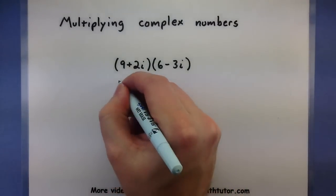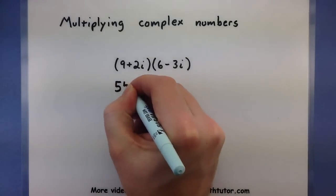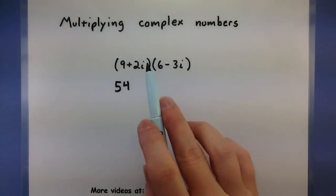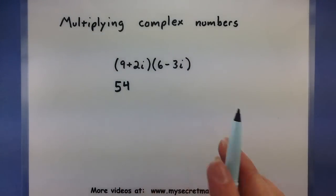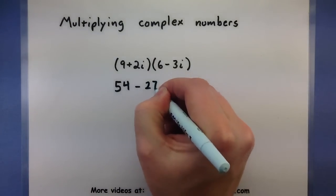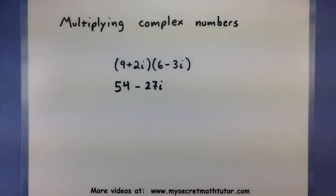9 times 6 will be my first terms and that will give me 54. Now I'll take my 9 times negative 3i, get minus 27i. There's my outside terms.